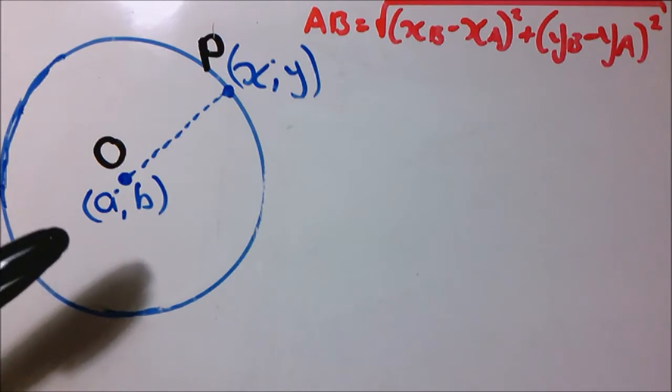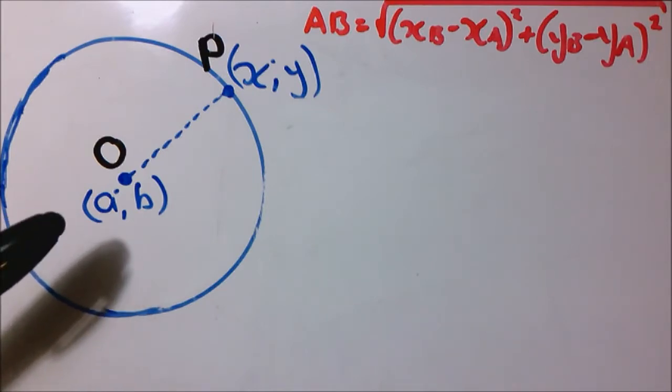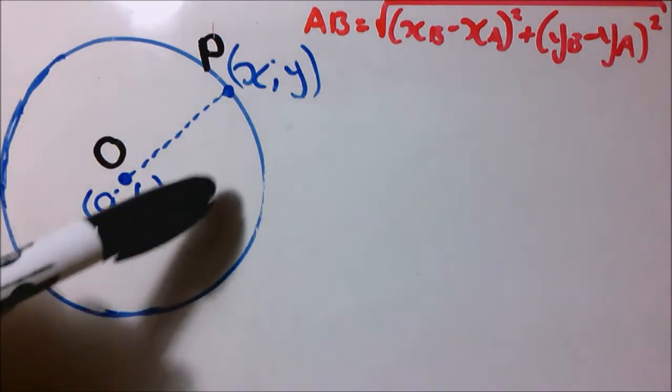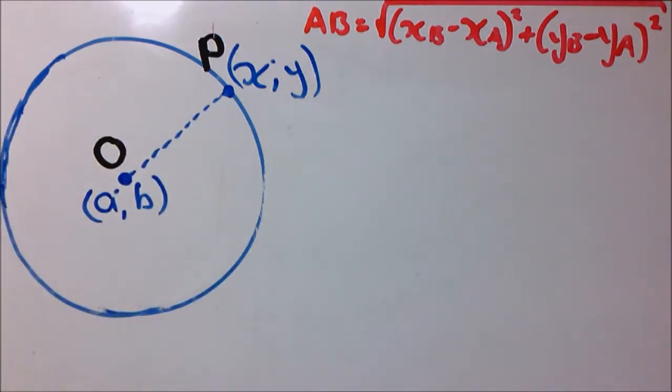This is a general circle with center O coordinates A, B and any point on the circle, unknown coordinates X and Y for point P. So let's apply the distance formula.